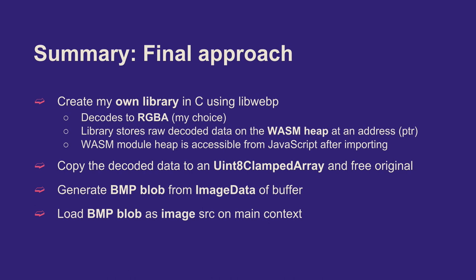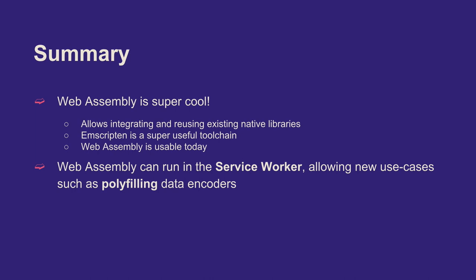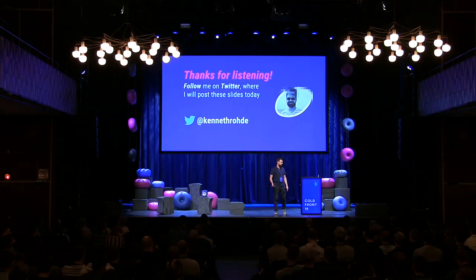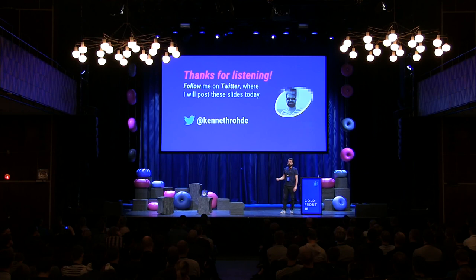My final approach: generate my own C library, decode to RGBA, take the data written to the WebAssembly heap, copy it to JavaScript land, free the original data, generate an image buffer, and load that as a BMP blob using my BMP encoder. I think this is really amazing — what you can do with WebAssembly today combined with ServiceWorker. You can really polyfill features that don't exist yet. I encourage you to go home and play with WebAssembly. I'll be posting these slides online. Feel free to talk to me at any point. Enjoy Cold Front — thank you!